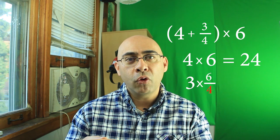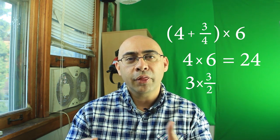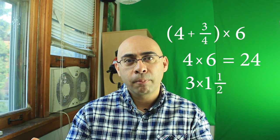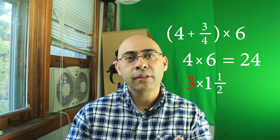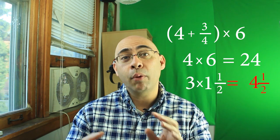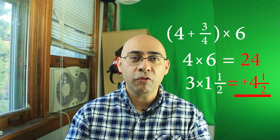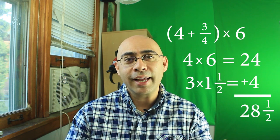We do six divided by four, we can simplify that as three over two and three over two is just one and a half. And one and a half times three is four and a half. And now we add the four and a half plus the twenty-four to get twenty-eight and a half.